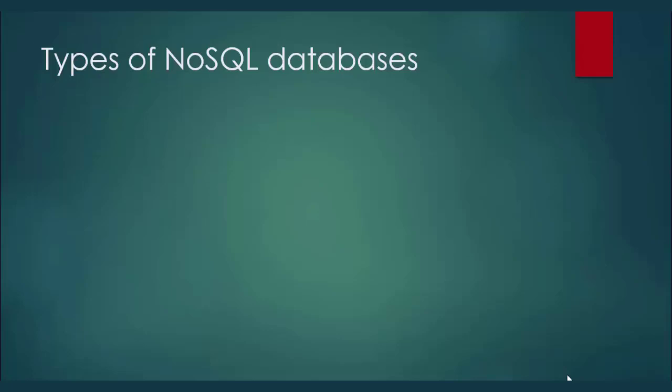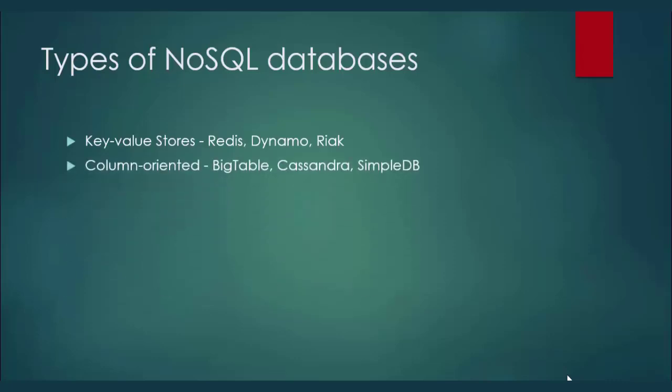There are four types of NoSQL databases available. The first is Key-Value Stores, examples being Redis, Dynamo, and Riak. In this kind of database, we store data in the form of key-value pairs. With the reference of a key, we store a value, and that value can be anything — a number, string, character, document, or anything.